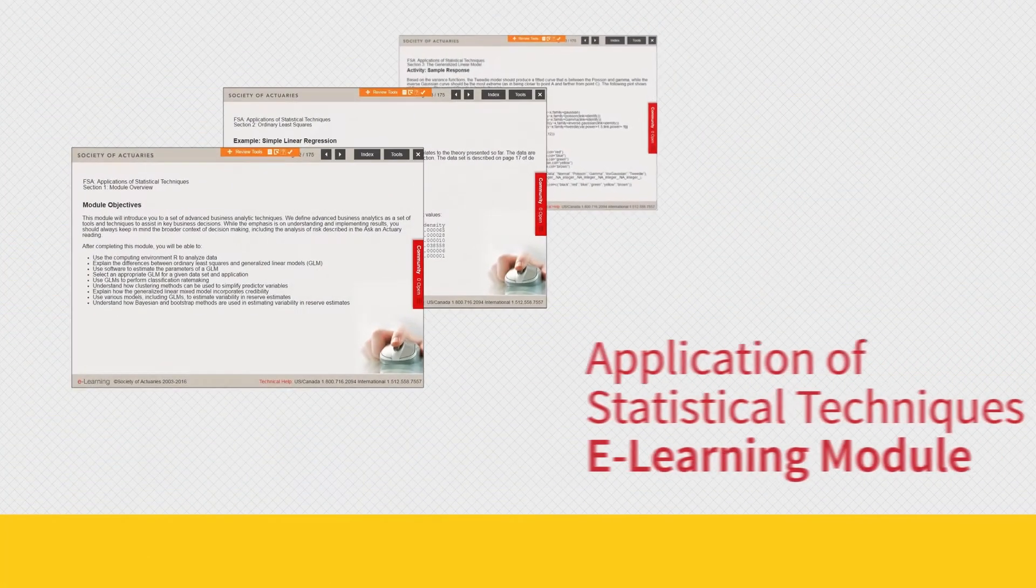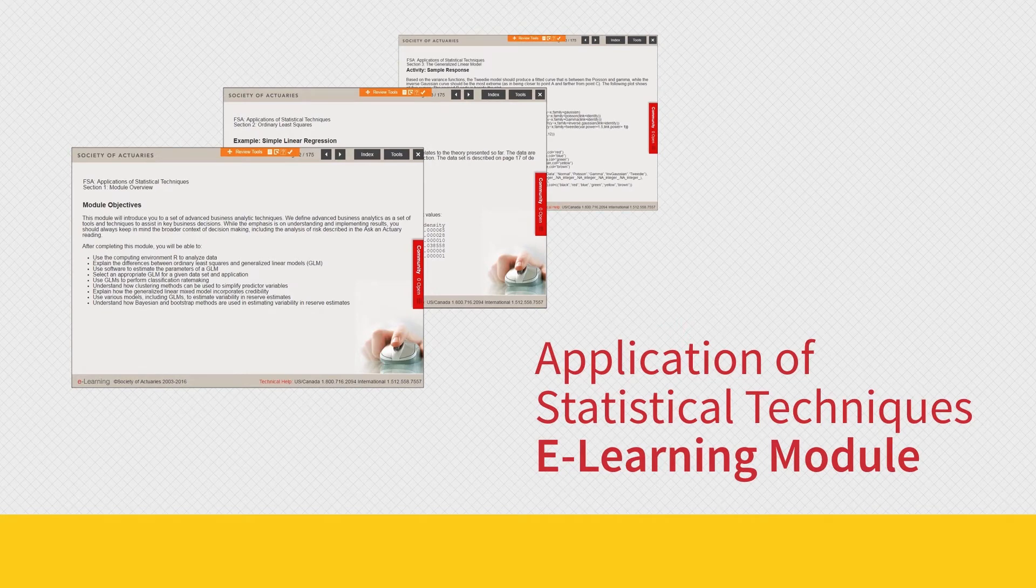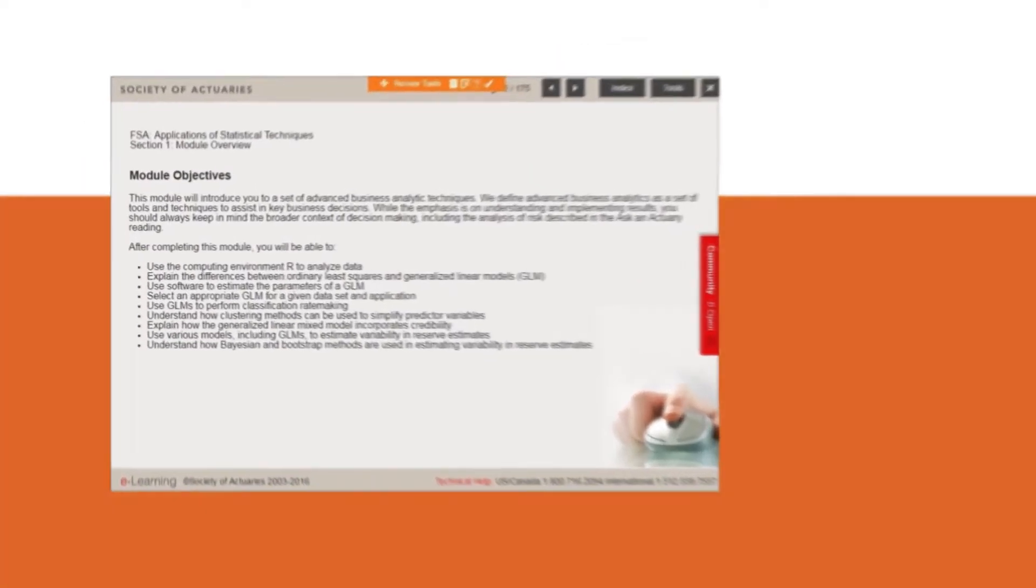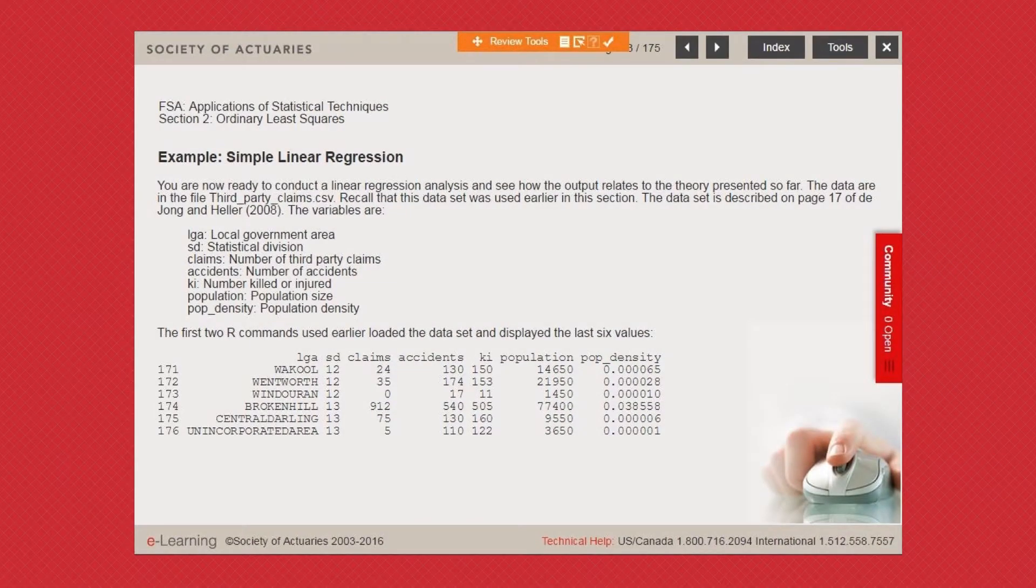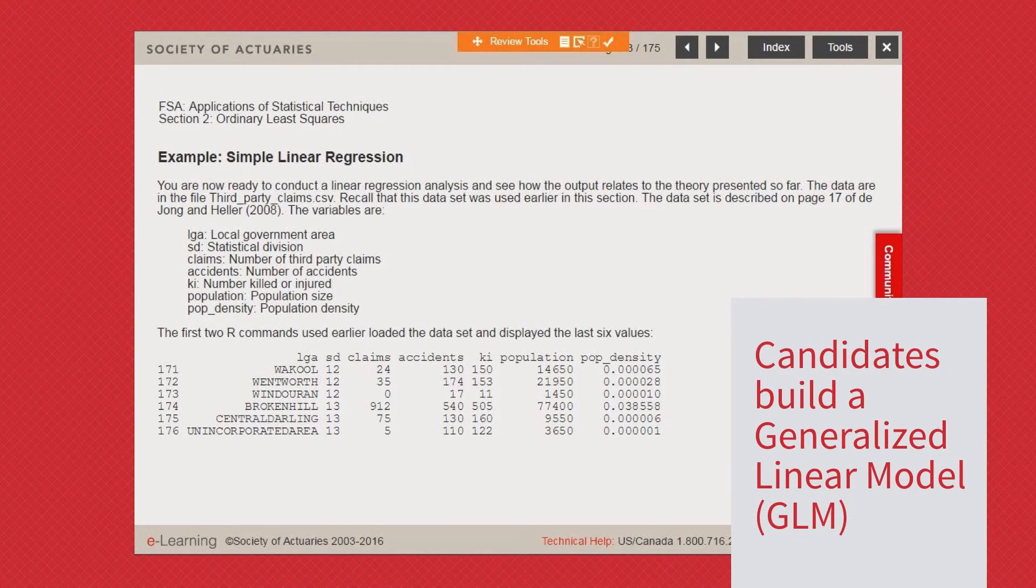That's why the SOA introduced the Application of Statistical Techniques eLearning module as a key feature of the General Insurance Track Fellowship. One of several eLearning modules within the General Insurance Track, here candidates learn how to build a Generalized Linear Model, or GLM, a fundamental technique for rate making using the R environment.